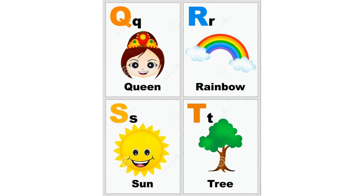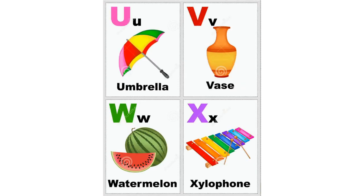T for tree, U for umbrella, V for vase, W for watermelon, X for xylophone.